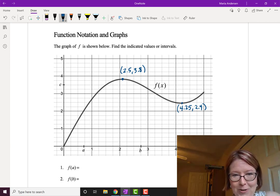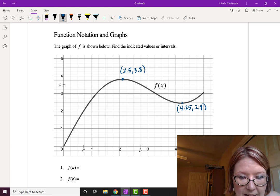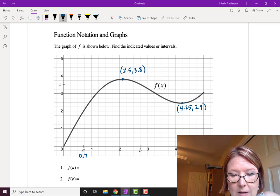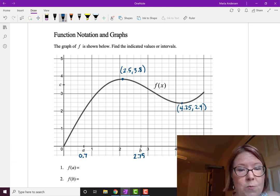There are three values marked on the graph with a, b, and c. On the x-axis we have an a marking at about 0.7. We have a b marking at about 2.75. And then on the y-axis we have a c marking at about 3.5.